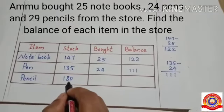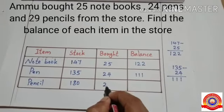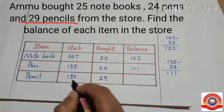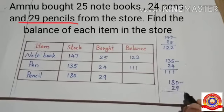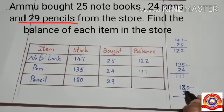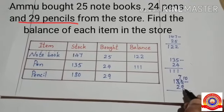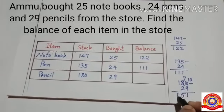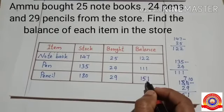We have 180 pencils. How many pencils did Ammu buy? Yes, 29. To find the balance number of pencils, subtract 29 from 180. 180 minus 29: it is not possible to subtract 9 from 0, so we have to borrow 1 from 8. 8 becomes 7 and 0 becomes 10. 10 minus 9 is 1, 7 minus 2 is 5, then write the remaining 1. So the balance number of pencils is 151.